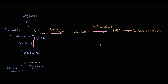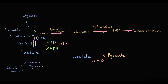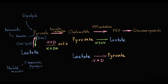The conversion between pyruvate and lactate can occur in both directions. The determining factor is the NAD-to-NADH ratio: conversion of lactate to pyruvate requires NAD, while conversion of pyruvate to lactate requires NADH. Therefore, higher NAD concentration means more pyruvate and less lactate, and vice versa — higher NADH concentration means more lactate and less pyruvate.